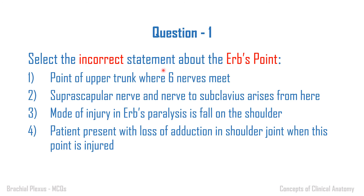Coming back to question one — it asks for the incorrect statement regarding Erb's point. Option one: it is in the upper trunk and six nerves meet — correct. Option two: suprascapular nerve and nerve to subclavius — correct. Option three: mode of injury is fall on the shoulder — correct. Option four: patient presents with loss of adduction — this is incorrect, because they present with adduction due to loss of abduction. So the correct answer is option four.